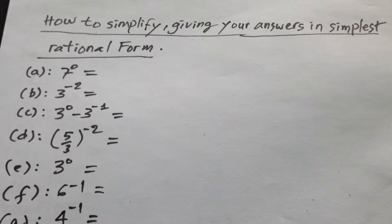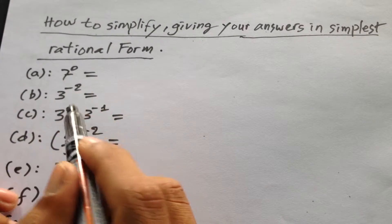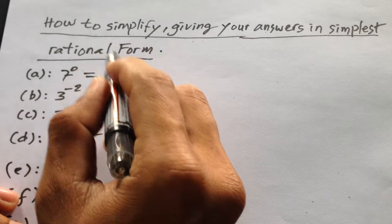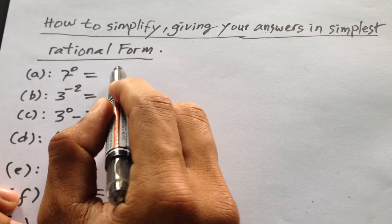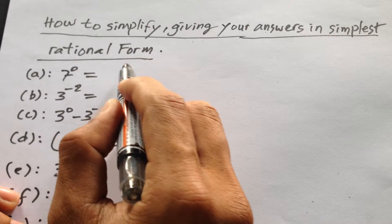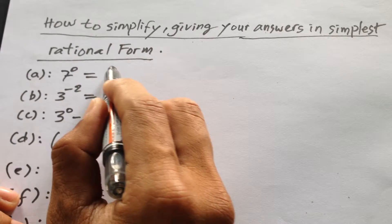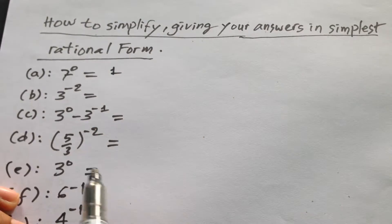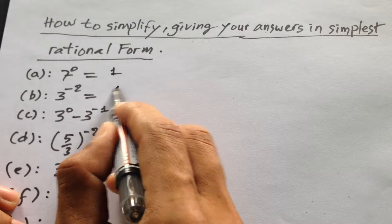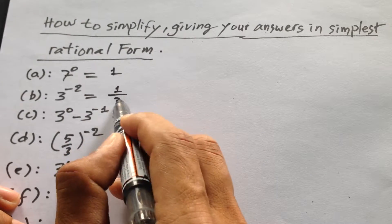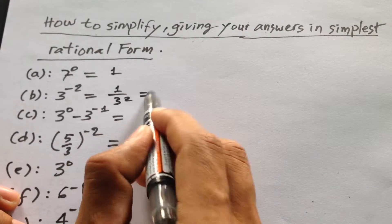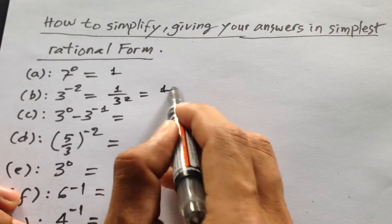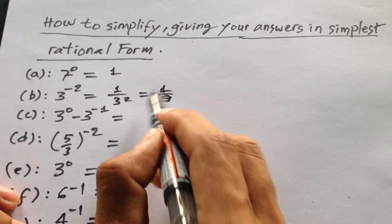So 7 to the power 0 will be 1. And this 1 over 3 to the power 2 is equal to 1 divided by 9.